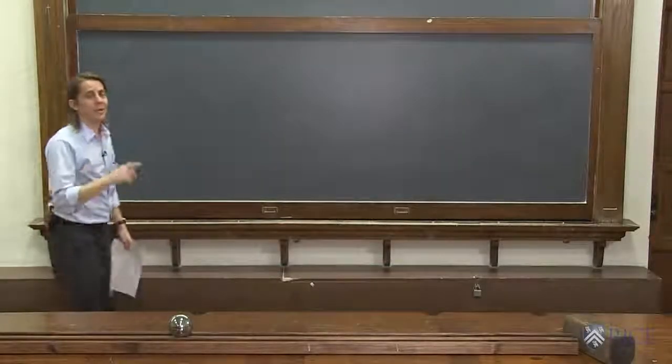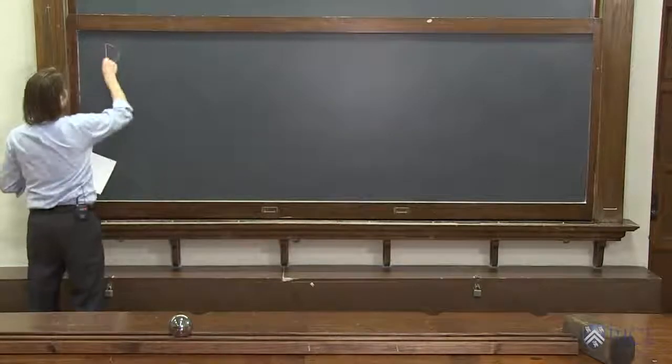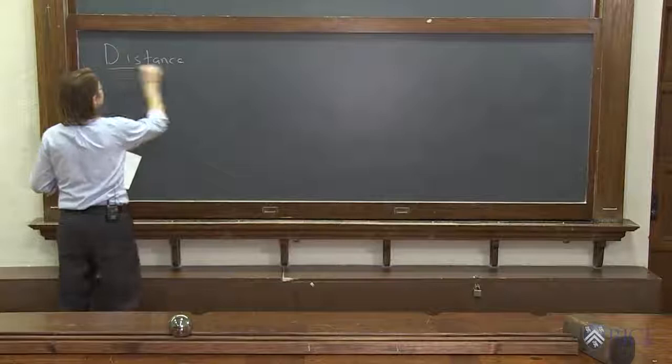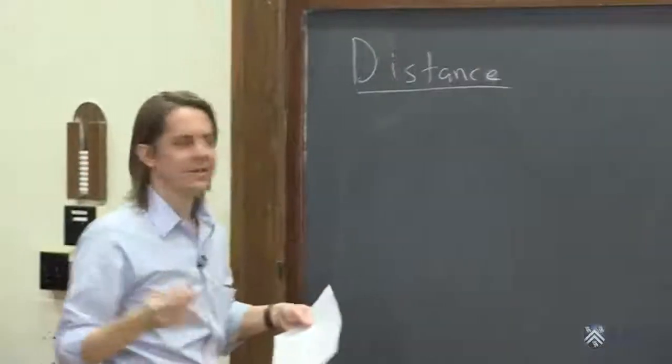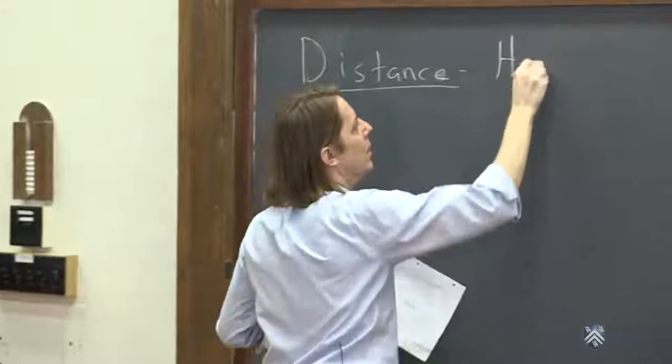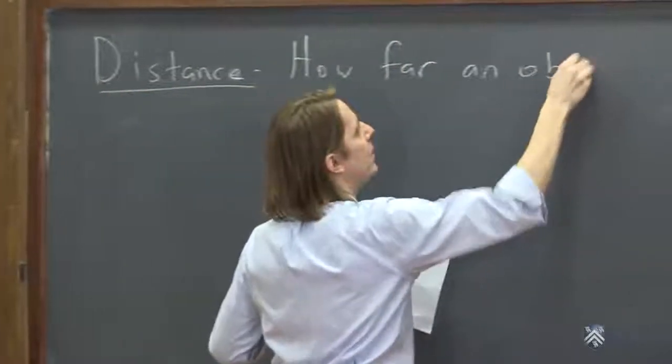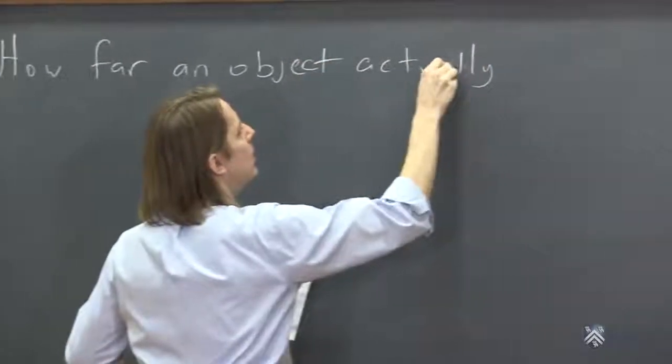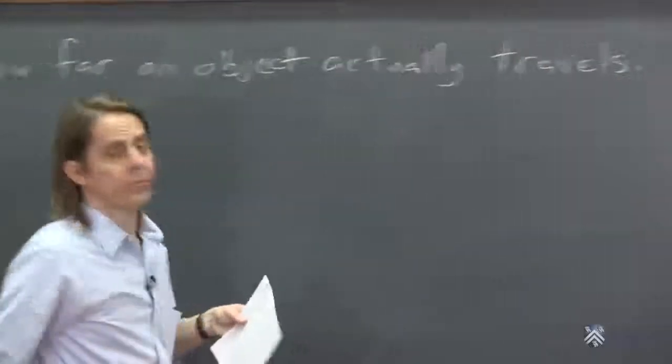We've talked about position and displacement, but believe it or not, there's a third quantity to describe positions and changes in positions, and that is distance. So distance is how far an object actually travels.